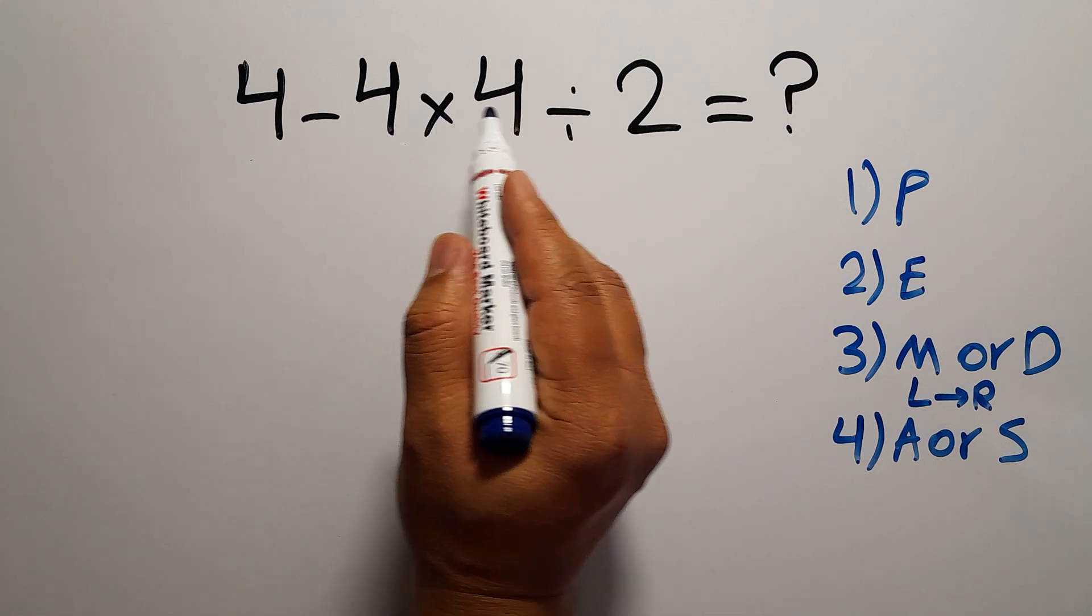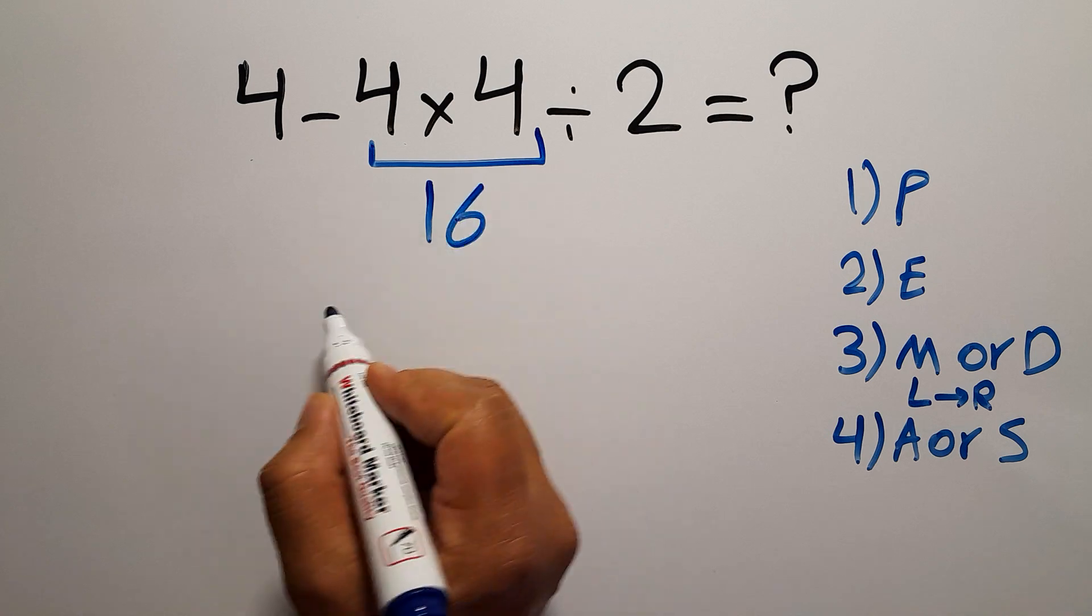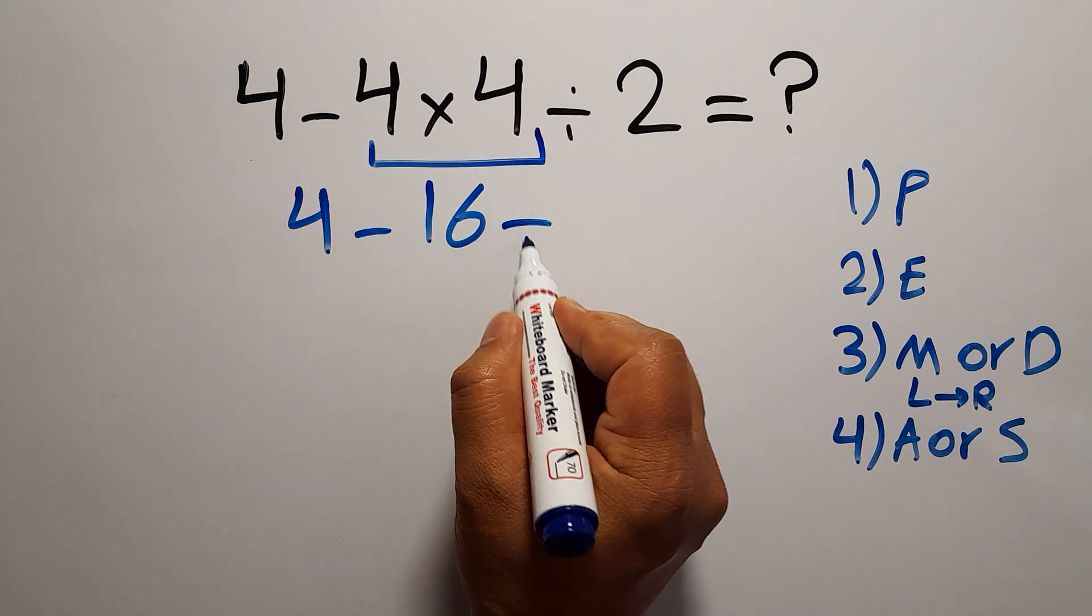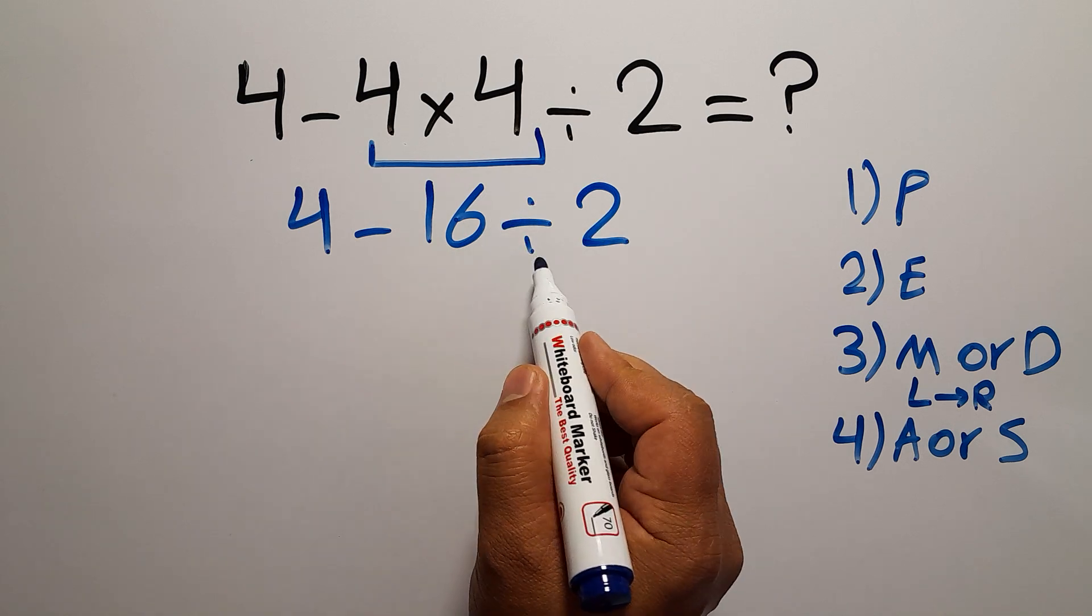16 ÷ 2 gives us 8. So 4 - 8 equals negative 4.